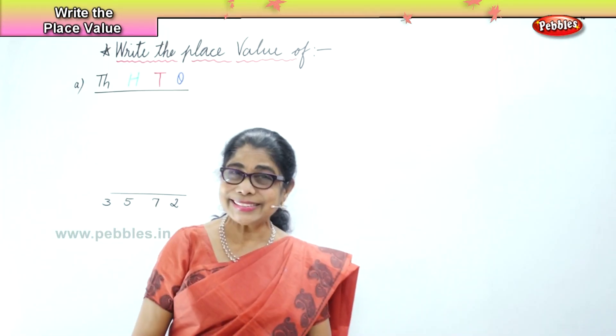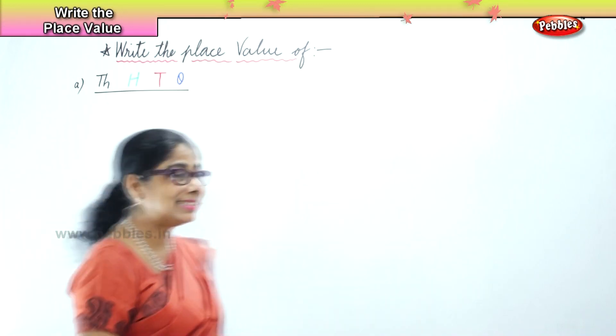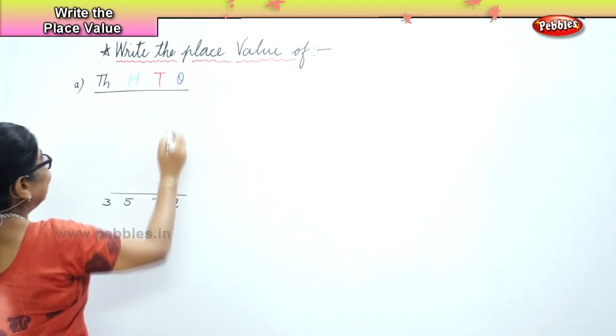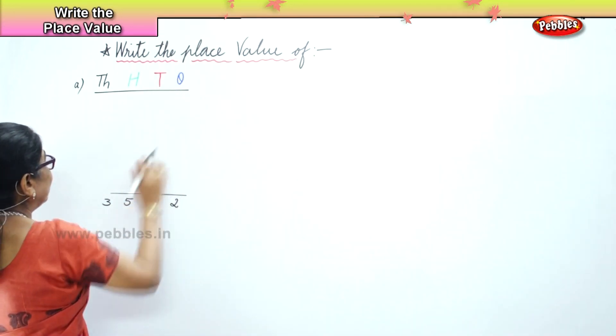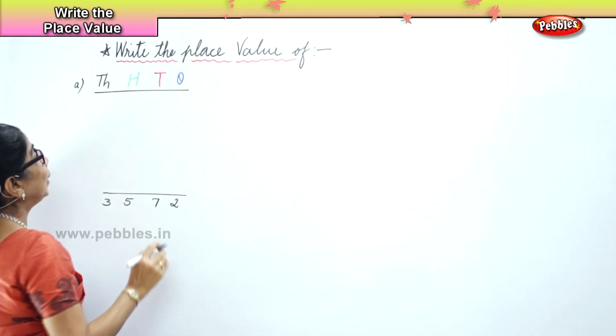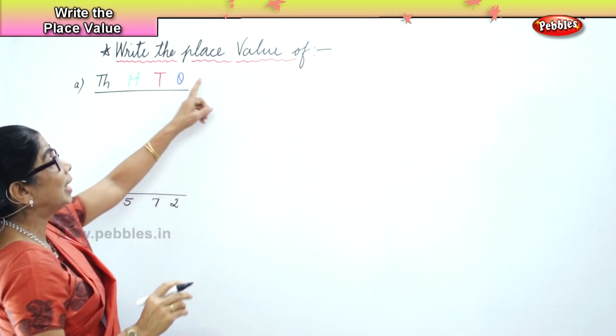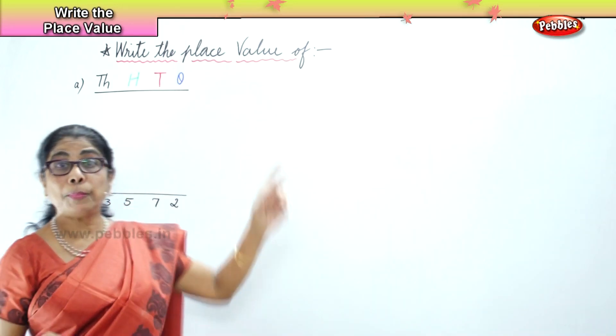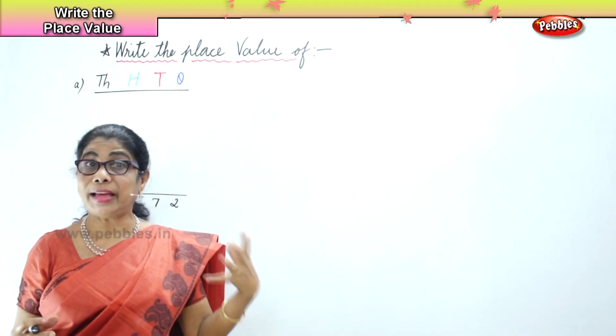So you have one, ten, hundred, thousand. Now I want you to place — we are talking about place value.